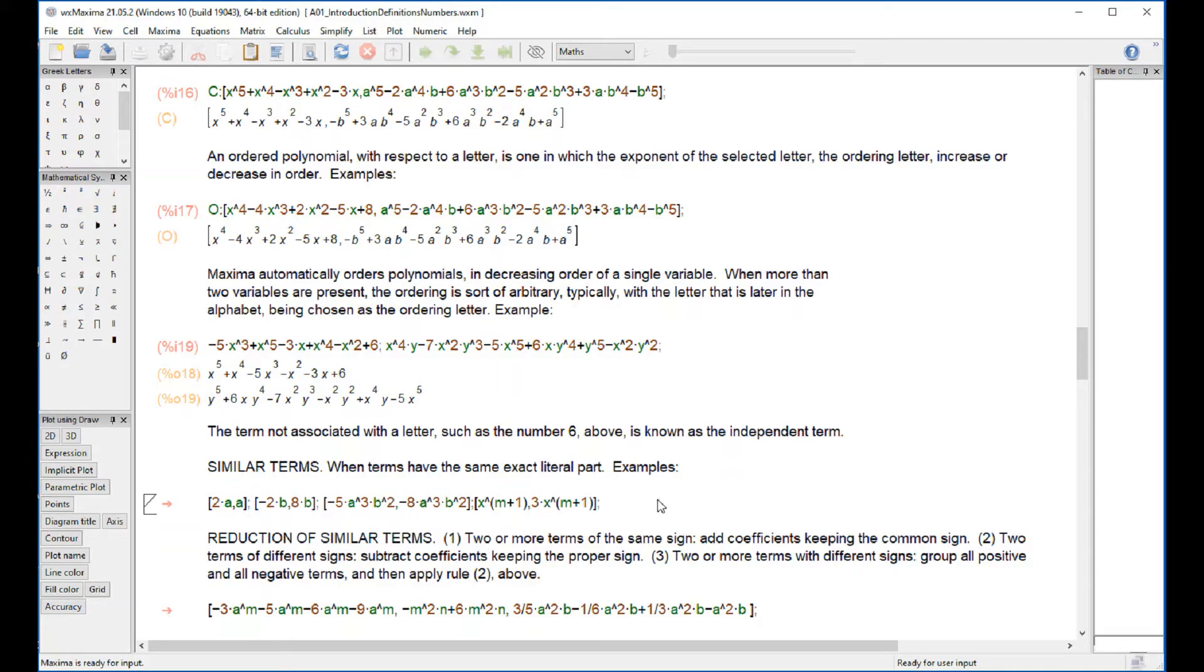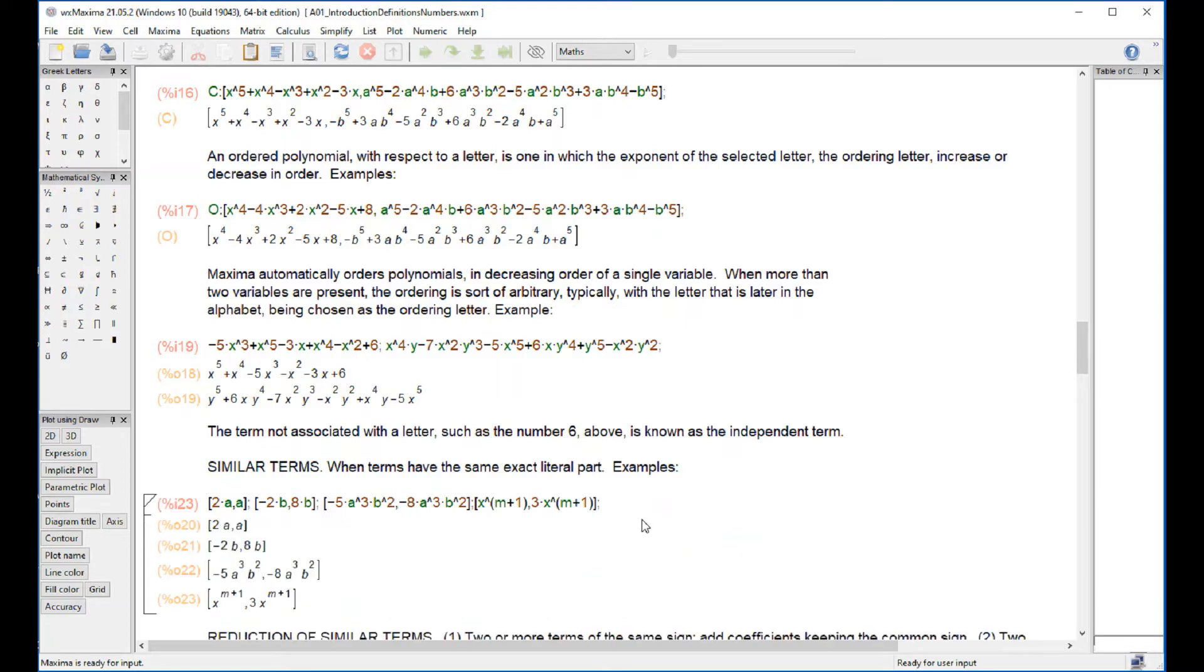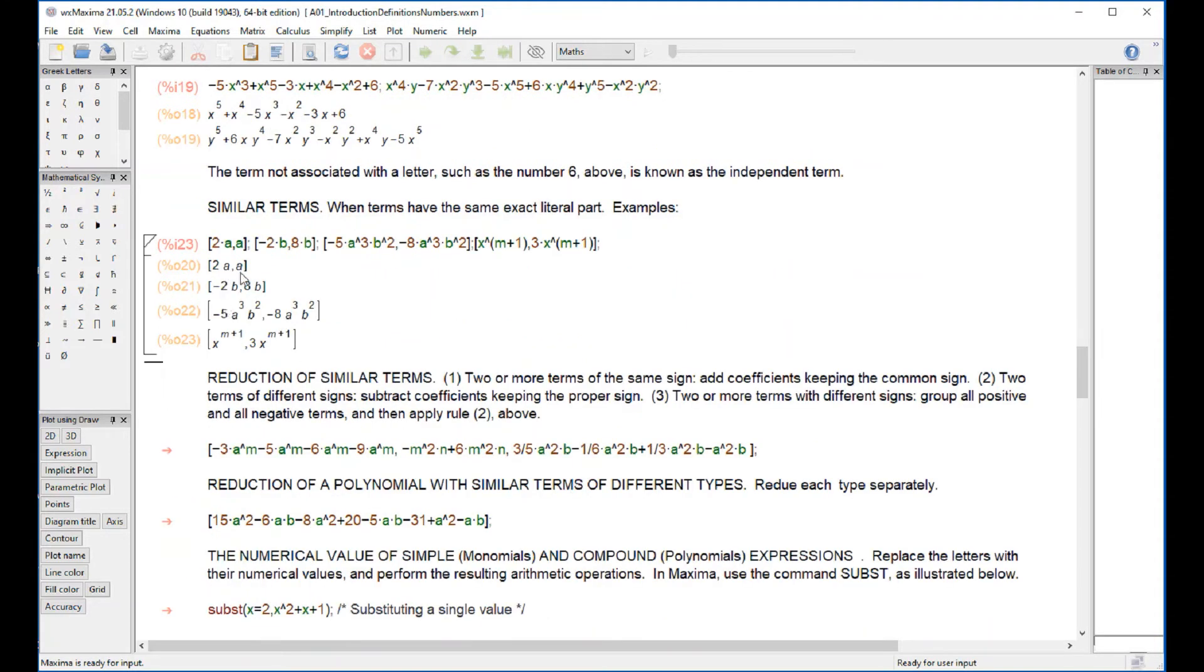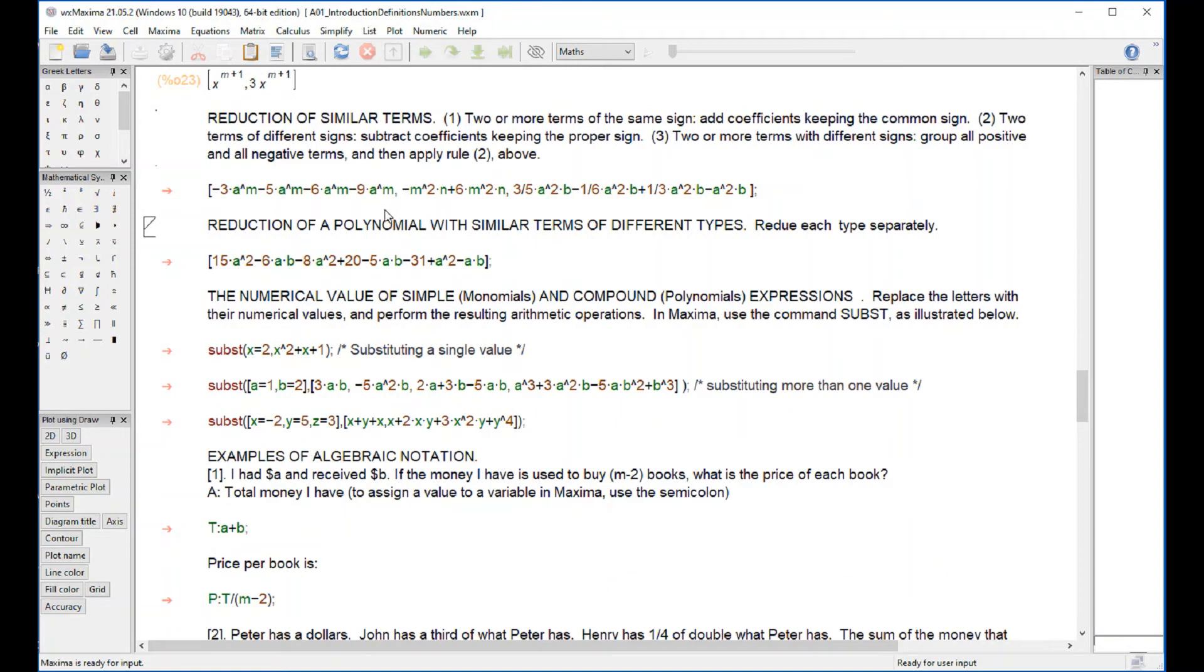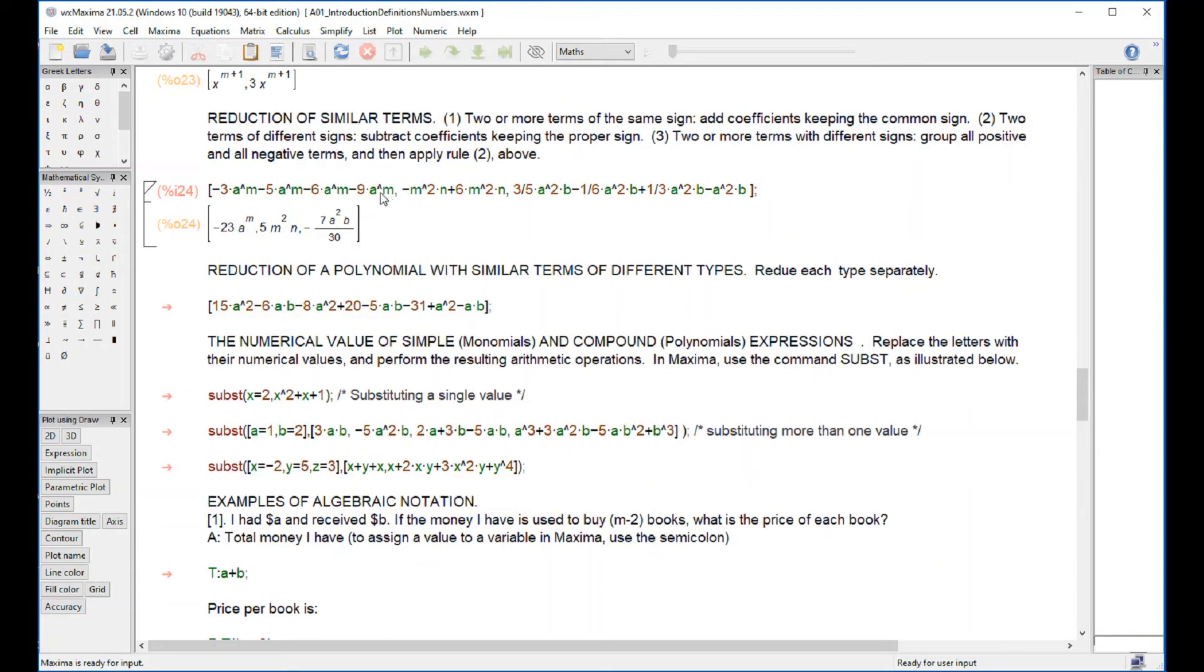Similar terms are those that have similar literal parts like 2a and a, -2b and b, a³b³ multiplied by -5 or -8, x^(n+1), 3x^(n+1). So those are similar terms. And how you reduce them? Well, you apply the rules of multiplication, the addition and summation. So all these terms right here get reduced to -23a^m. These are similar terms.